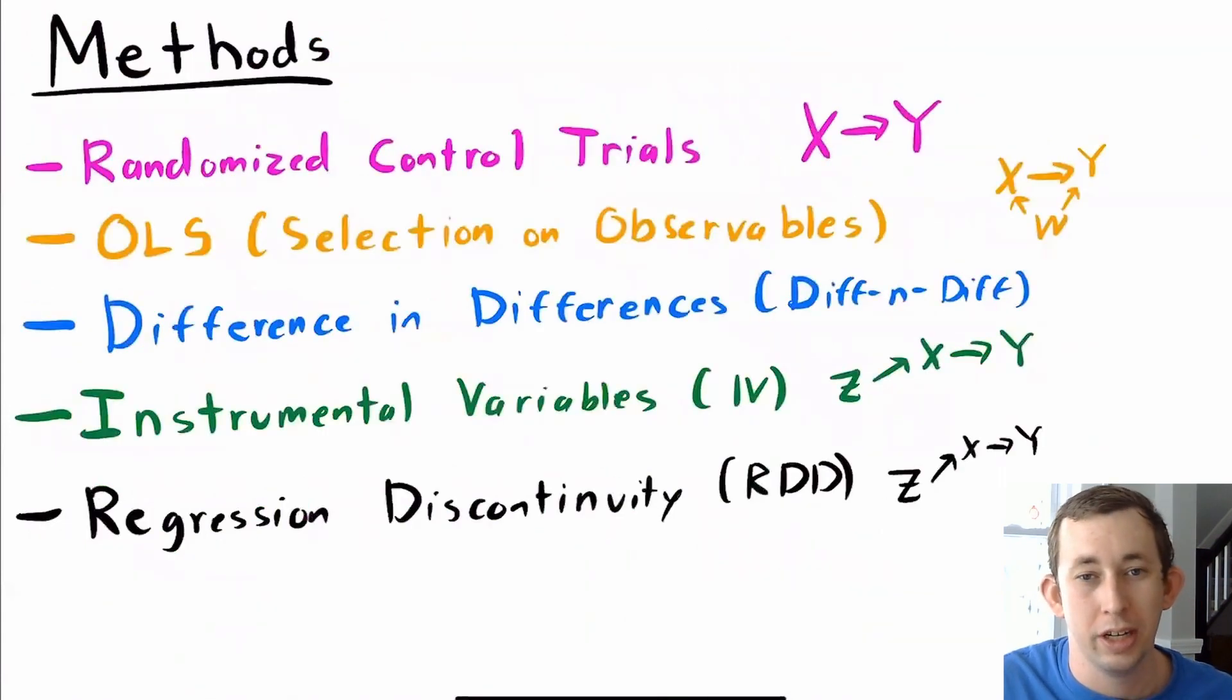What are some of the methods we're going to talk about to show that correlation could be causation? Well, we could do some randomized control trials because that would indicate that X just causes Y because we've controlled everything.